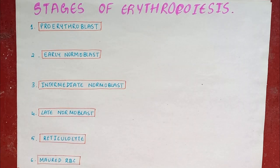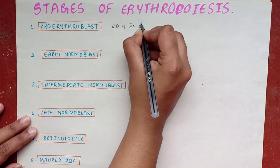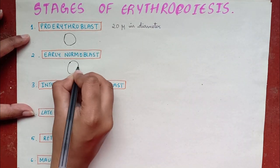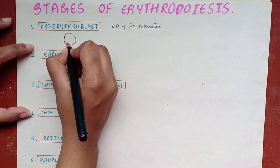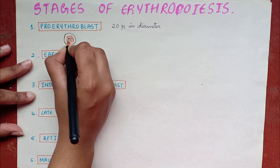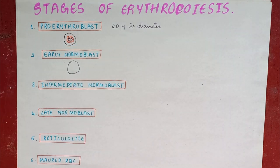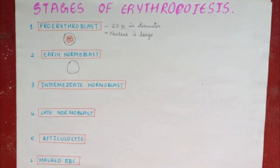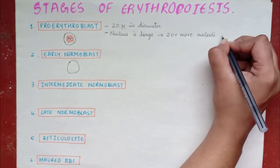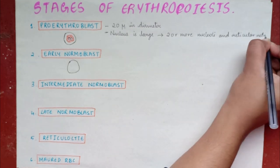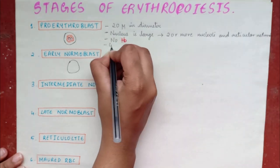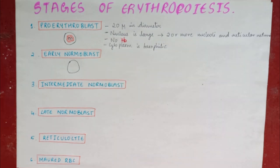Pro-erythroblast, also called megaloblast, is very large in size with a diameter of 20 microns. Its nucleus is large and occupies the cell almost completely. It does not contain hemoglobin and the cytoplasm is basophilic in nature.